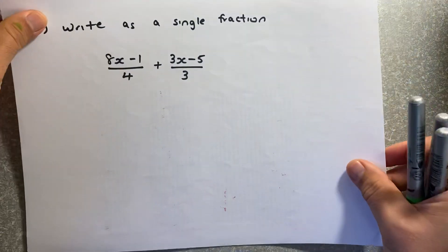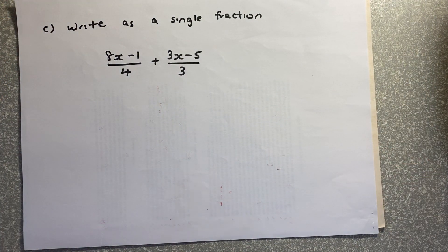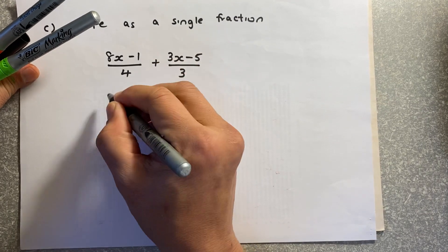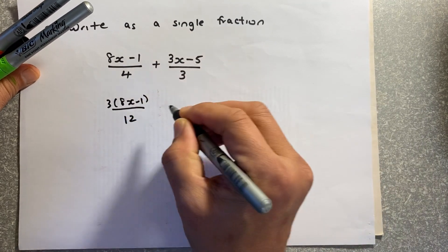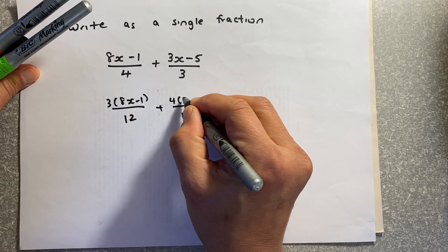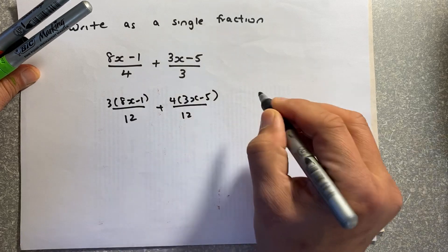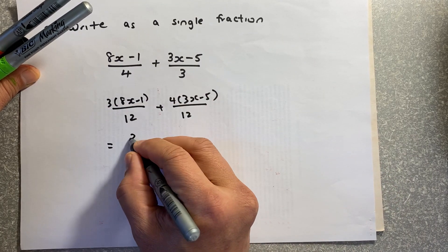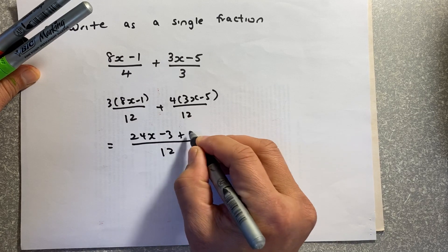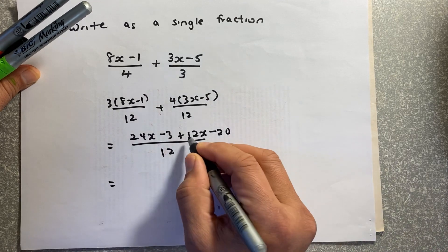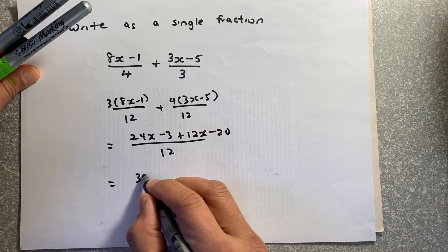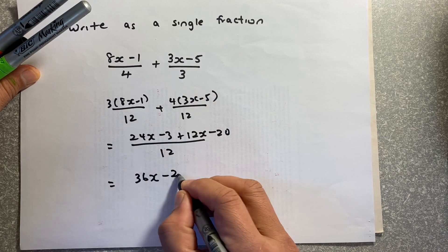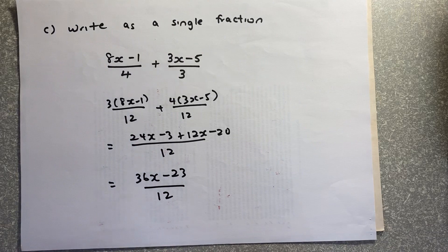There is one more question: write as a single fraction. The common denominator is 12. Multiply the first fraction by 3 to get 3(8x − 1), and the second by 4 to get 4(3x − 5). Combine over 12 and expand: 24x − 3 + 12x − 20. Simplifying like terms: 36x − 23 over 12. That gives another merit.